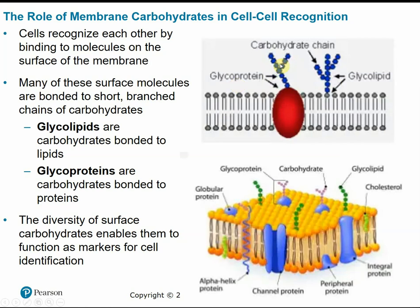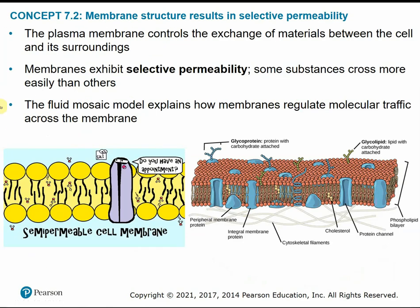Going back to the underlying theme that structure reflects function: the structure of the membrane results in its function as a selectively permeable membrane. This means it tightly regulates and controls the exchange or movement of materials between the cell and its surroundings — some substances are able to cross the membrane more easily than others. This is how the cell maintains homeostasis, so we can obtain from the environment precisely what we need when we need it. This fluid mosaic structure helps explain how membranes regulate molecular traffic across the membrane.